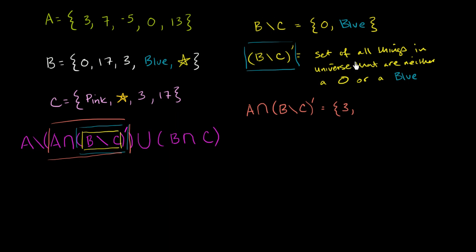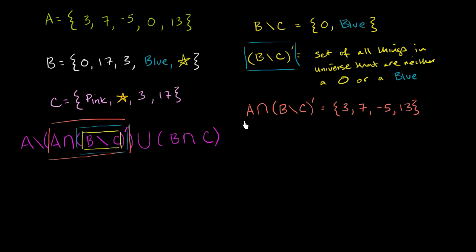The number 7 is in A and it's in the set of all things that are neither a 0 nor a blue, so let's put a 7 there. Negative 5 also meets that constraint. A 0 does not — it's in A, but it is a 0, so it's not in the complement set. And 13 is in A and it's in the set of things that are neither a 0 nor a blue, so we throw 13 in. This whole crazy business has simplified to the set {3, 7, -5, 13}.